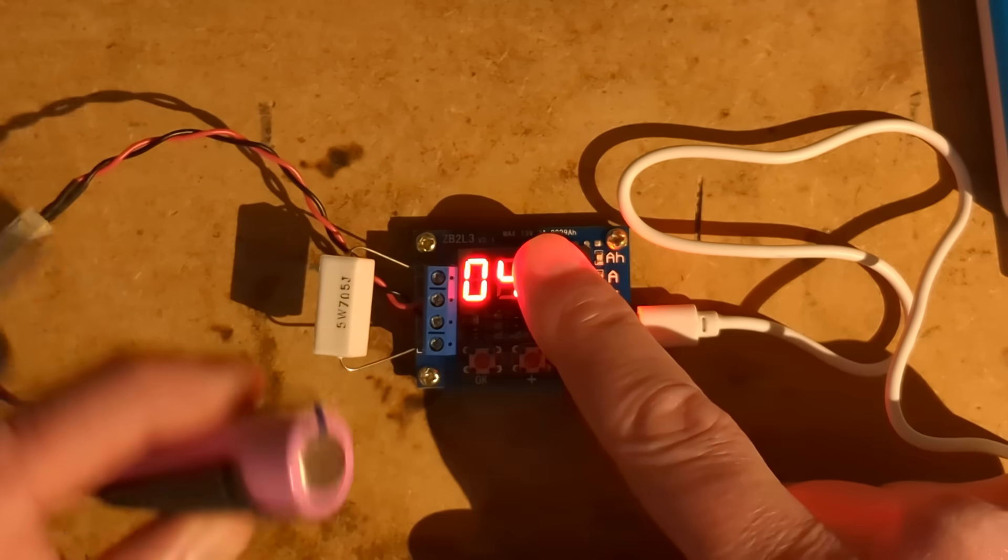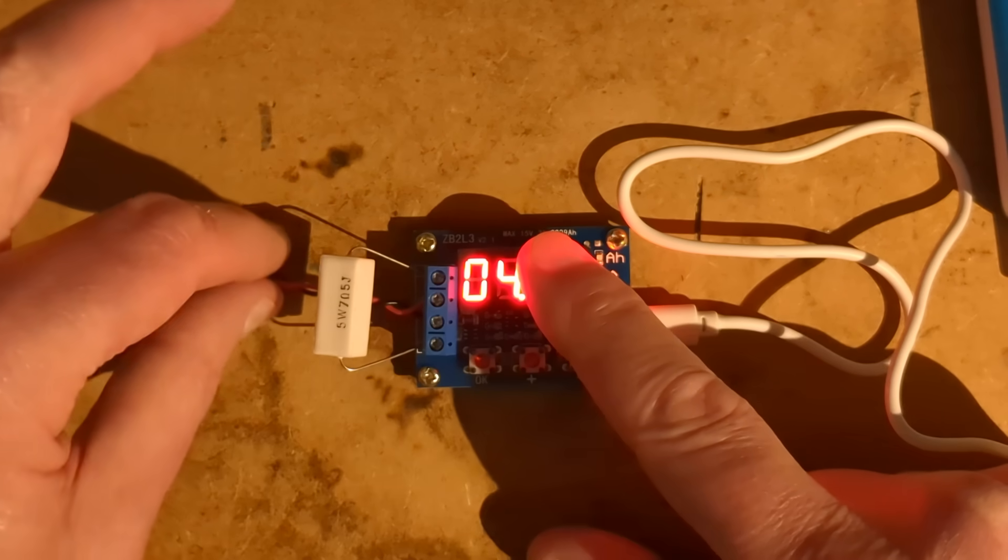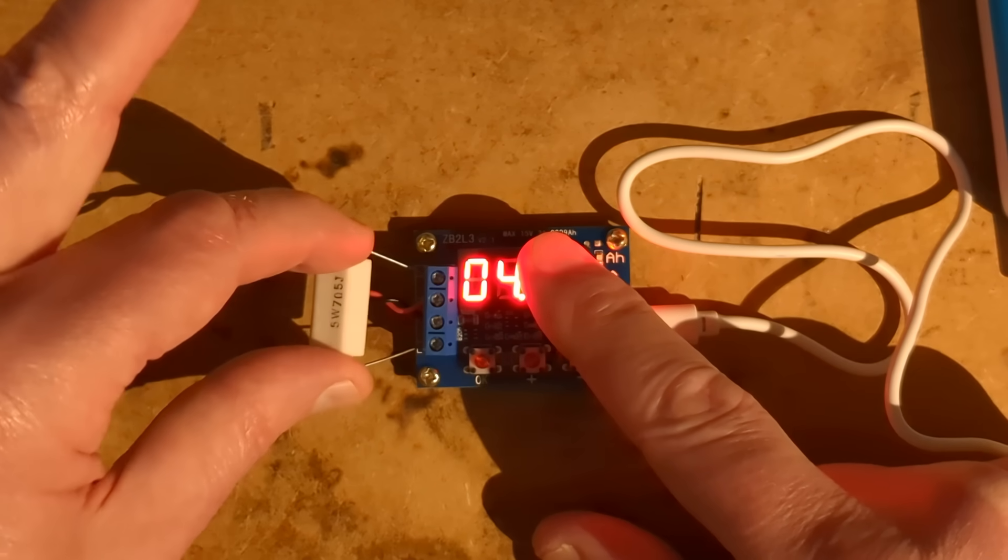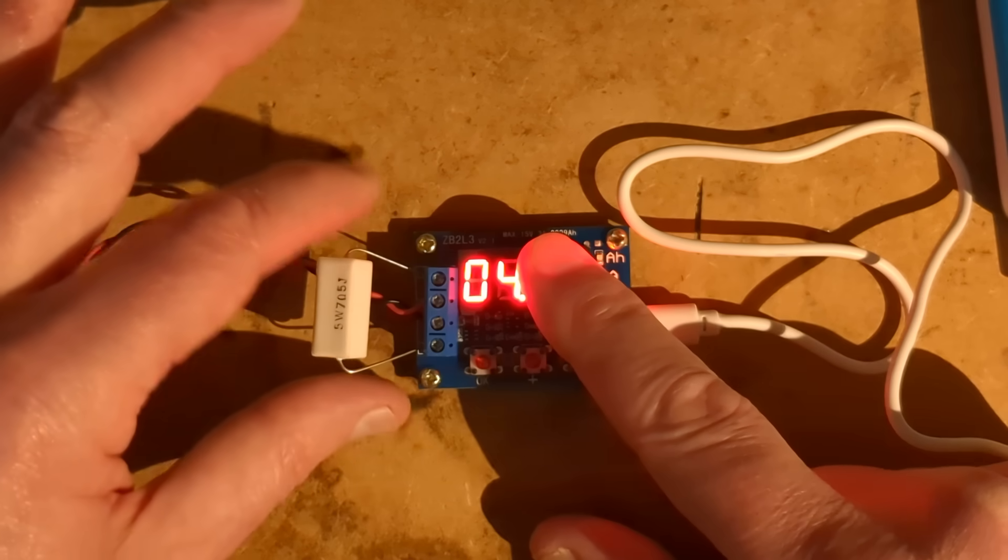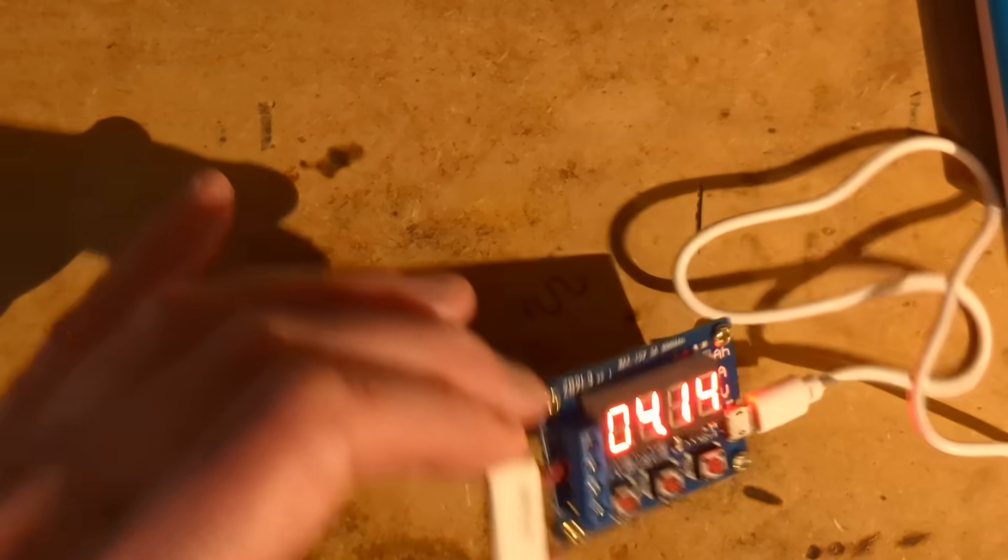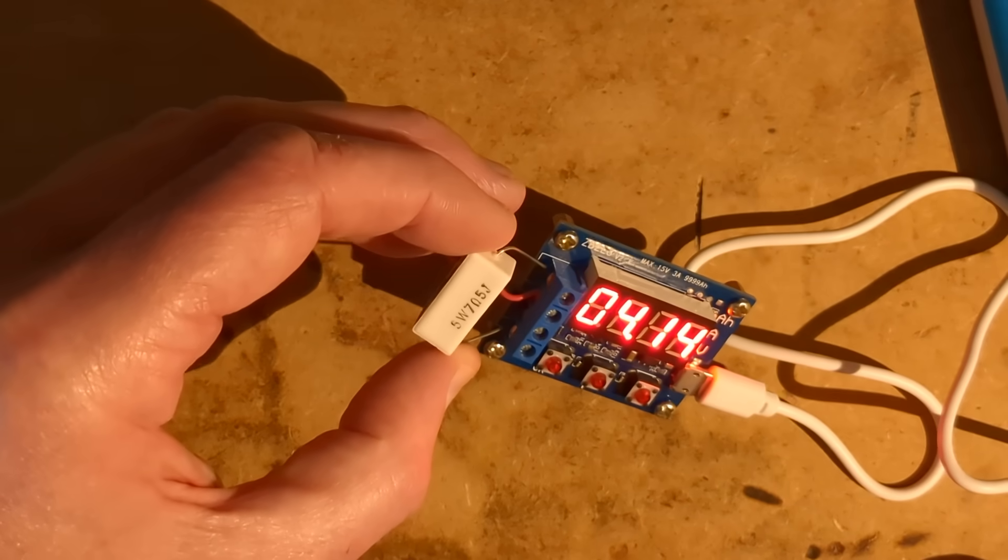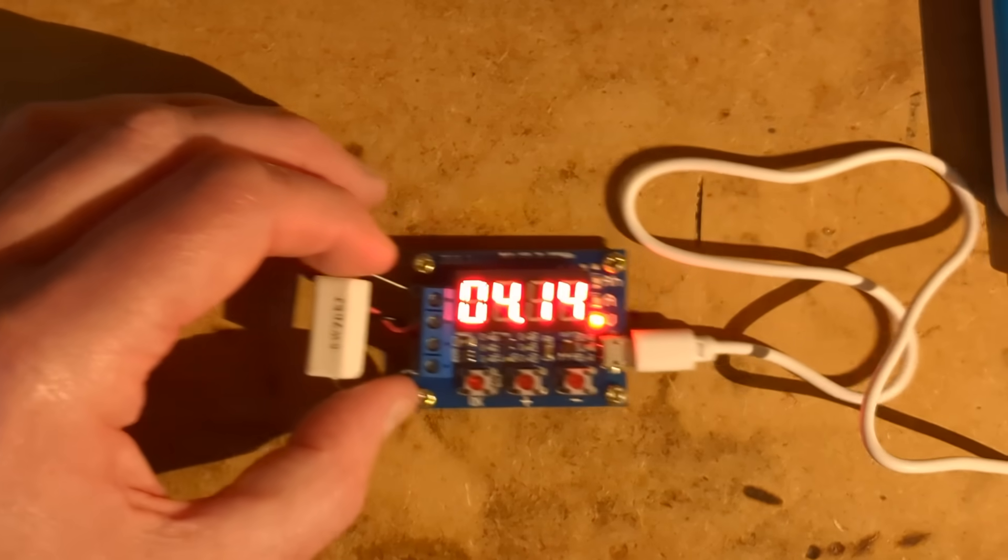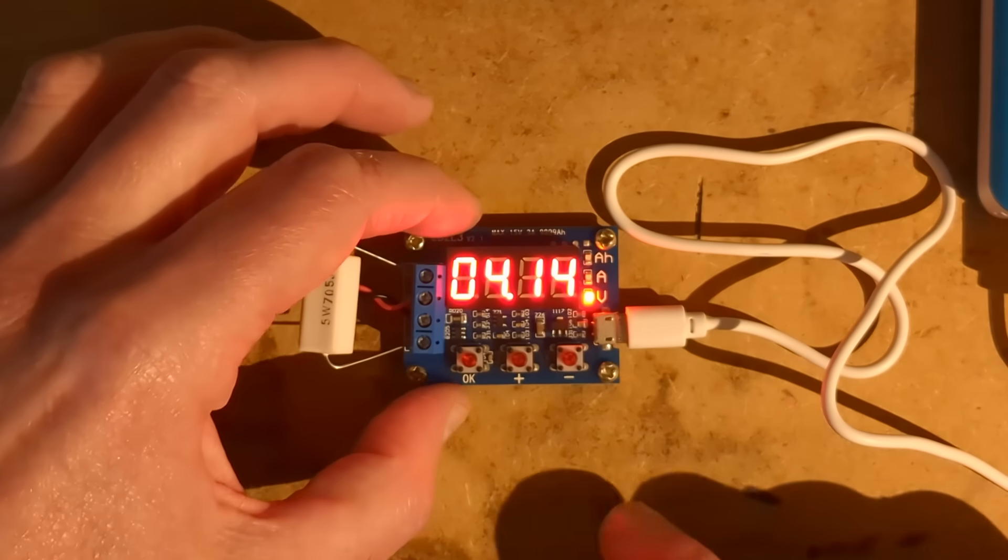You have a lithium cell connected to the two middle pins of the terminal block and then you have a resistor of your choice to set your preferred discharge current. In this case it is a 5 watt 7.5 ohm resistor which is going to pass about 500 milliamps.